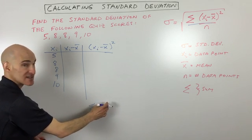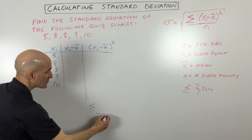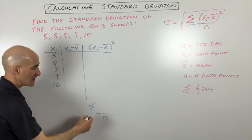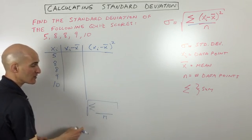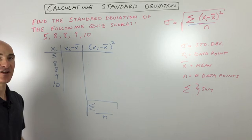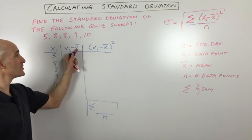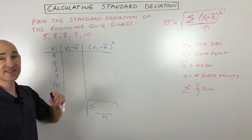Then we're going to add them all together. So we're going to take that sum, we're going to divide it by how many data points we have, which is n, and then we're going to take the square root, and that'll give us our standard deviation. So are you with me so far? First thing we need to do is find the mean, this x-bar, that's the average.